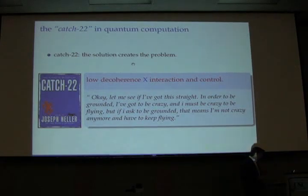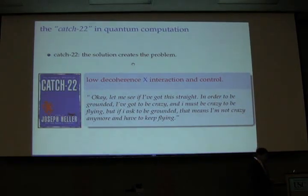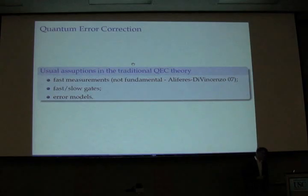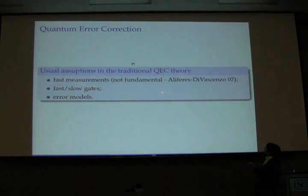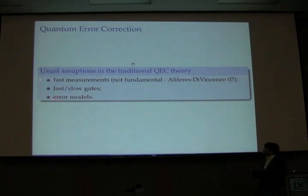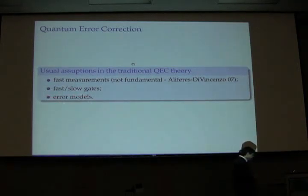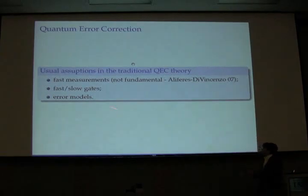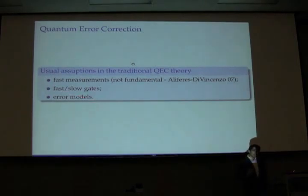It's believed that some sort of error correction will exist in the end of the day, unless you go to topological quantum computation. In traditional QEC theory, you need fast measurements, but this has been shown not to be fundamental by Aloferis and Vincenzo. You also have to worry about whether you're doing gates fast or slow, and most of the work is done with error models. Today I'm going to talk about these last two points: fast gates, slow gates, and error models — when it's okay or not to use them.